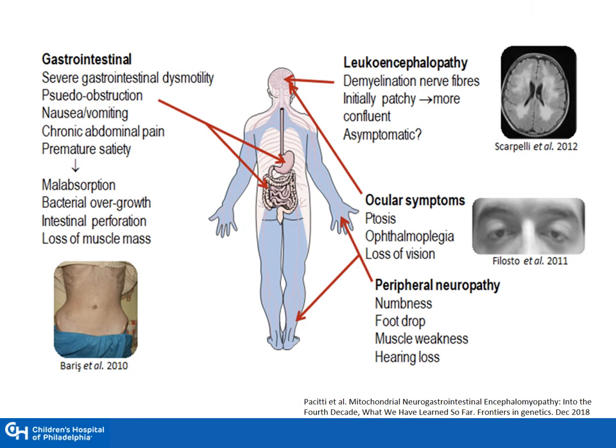Patients with MNGIE can have severe GI dysmotility presenting as pseudo-obstruction, and malabsorption leading to malnutrition. There is an asymptomatic leukoencephalopathy, patients have ptosis, loss of vision, and peripheral neuropathy.